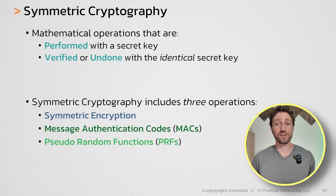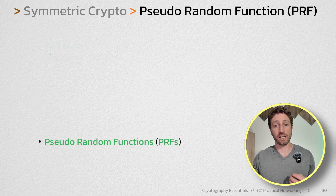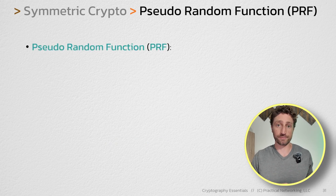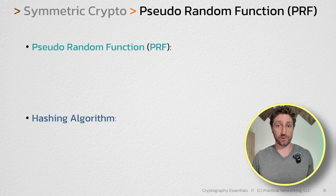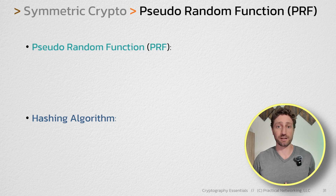Welcome to another video in my cryptography series. In this video, we're going to be looking at pseudo-random functions. The best way to understand PRFs is to compare them to something we've looked at before — a PRF is very similar to a hashing algorithm. To really understand their similarities and differences, it's easier to see the definition of both on the screen at the same time.